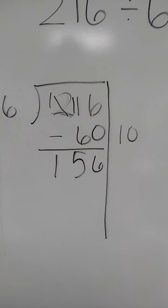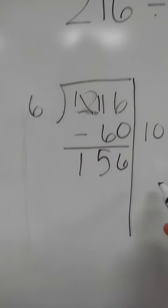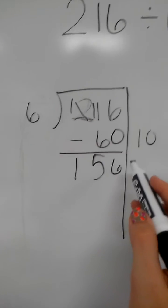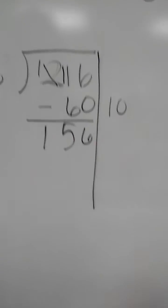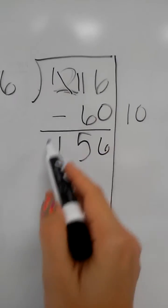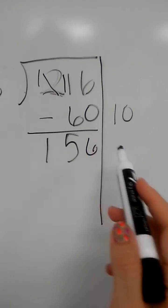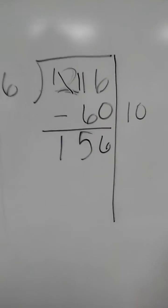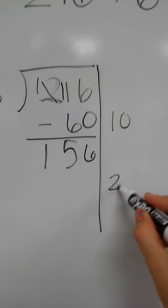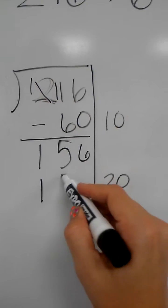So a lot of kids might know to think about this as 15 and think about 6 times what will get them close to 15, and they might know that 6 times 20 is going to give them 120.